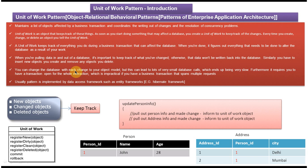You can change the database with each change to your object model, but this can lead to lots of very small database calls, which ends up being very slow. Furthermore, it requires you to have a transaction open for a whole interaction, which is impractical. Instead of informing the unit of work, we could directly save the information each time — but if there are a hundred objects, we would be calling the database a hundred times with small calls, making the system slow. Instead, we use the unit of work: we inform it of all changes, and at the end, it does all the database calls in one shot.